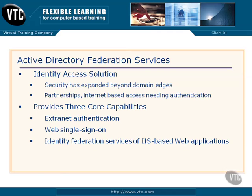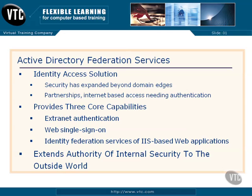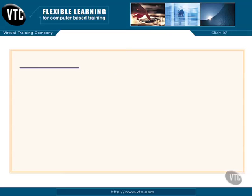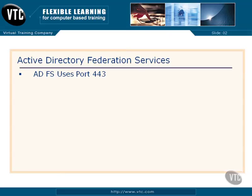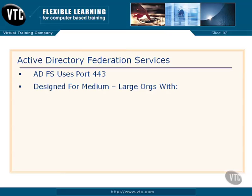The bottom line is that Federation Services extends the authority of our internal security world — meaning our Active Directory database — to the outside world. We can set up a federation connection to external organizations, and this uses port 443. That is one of those common ports we use: port 80, port 25, port 443. Port 443 is the secured port we use on a standard basis.